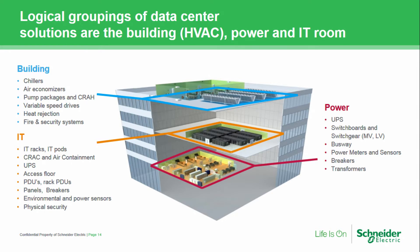And then you finally get to the IT space. The IT space includes IT racks, IT pods, your computer room air conditioning units, air containment, PDUs, panels, breakers, and physical security. These are the types of things that you find in the IT space.